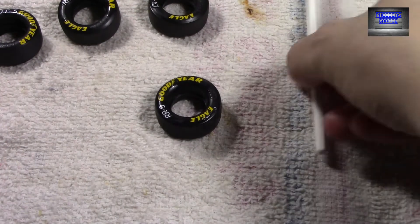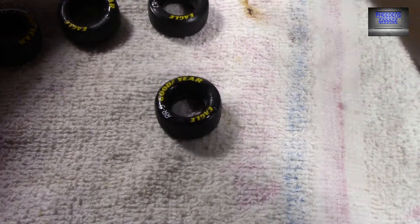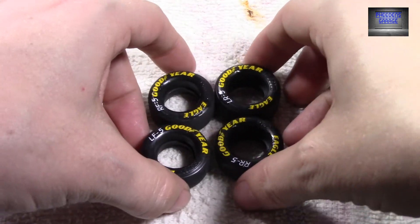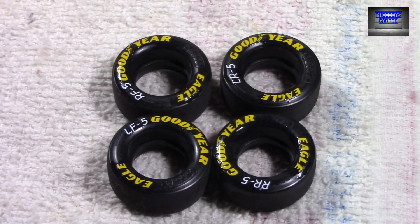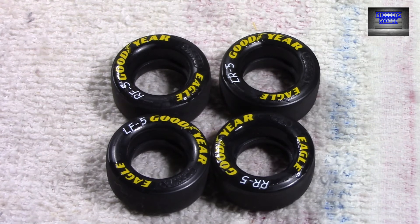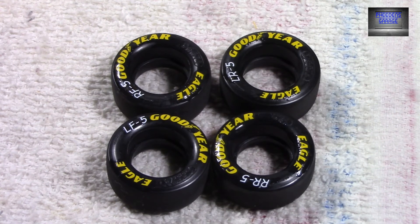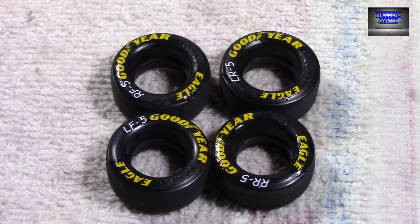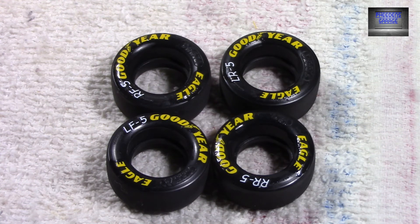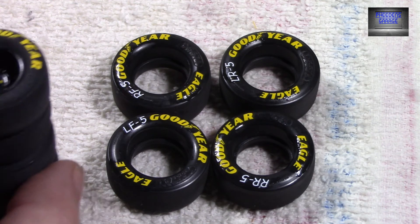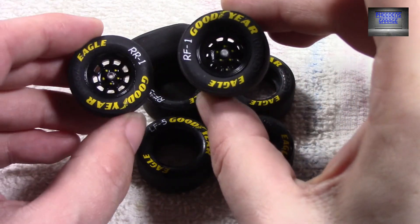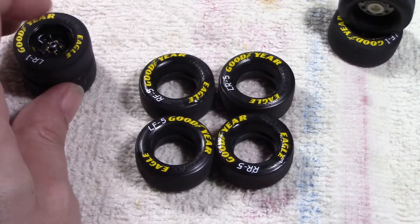All right so there we go, tires are done. I'm going to let them dry and once everything is dry I will coat them with the Testors Dullcote. Coat the entire tire, sidewall, contact area, everything and it'll be done. They will look like this. So there you go guys, thanks for watching.